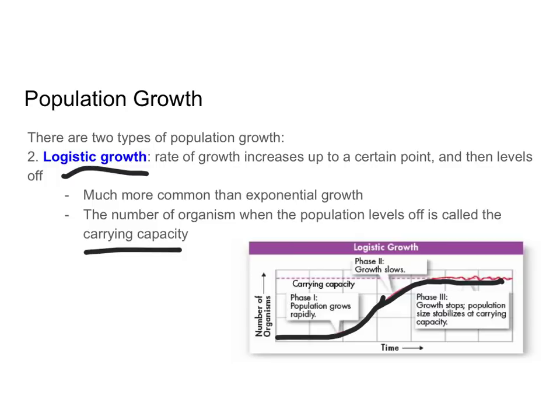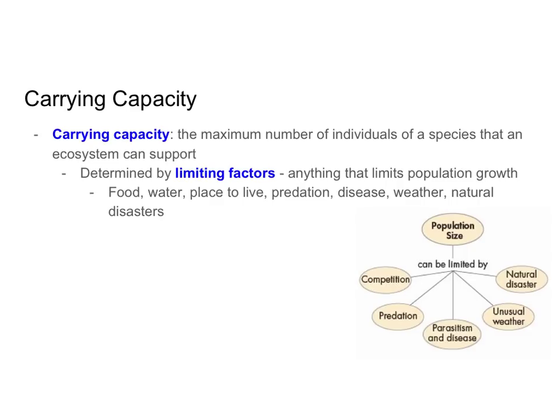Logistic growth is much more common than exponential growth because resources aren't unlimited and there will always be things limiting the growth of a population. Carrying capacity is defined as the maximum number of individuals of a species that an ecosystem can support, and it's determined by things called limiting factors.